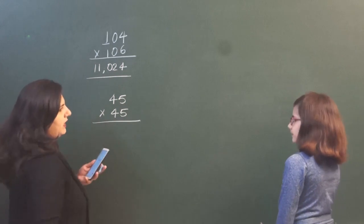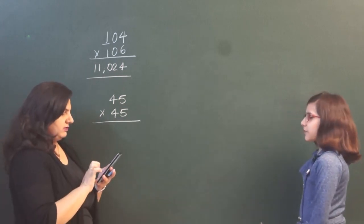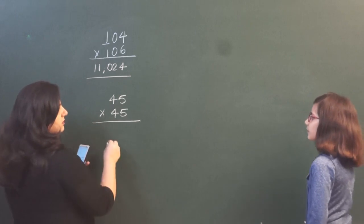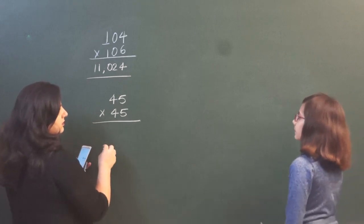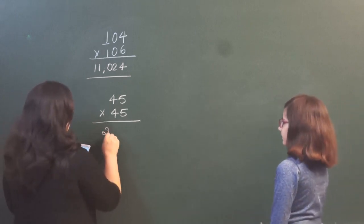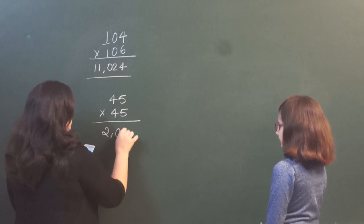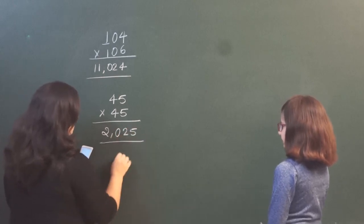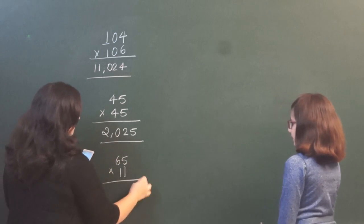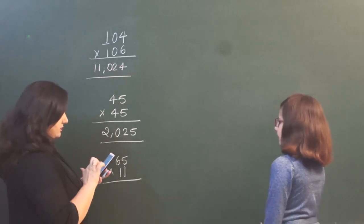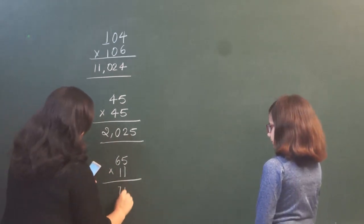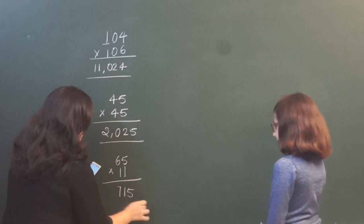45 × 45, or the square of 45. The answer is 2025. That's the correct answer. 65 × 11. The answer is 715. Very good, 715 — that's the correct answer.